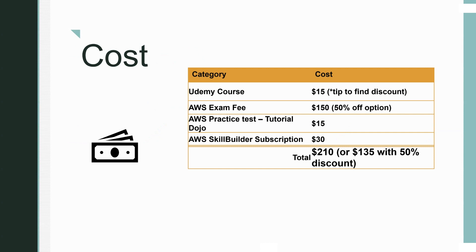Here's the cost breakdown. The Udemy course, with discount options, you can target around $15. The AWS exam fee is $150, but with the 50% discount option — for example from a previous AWS exam voucher or AWS challenge promotions I post in this channel — it comes to $75. Tutorial Dojo practice tests are around $15. AWS Skill Builder subscription, if you take it for one month, is $30. So total you'll spend around $135 with the 50% exam discount.